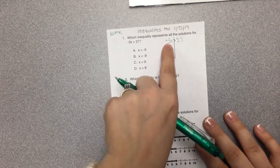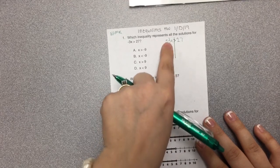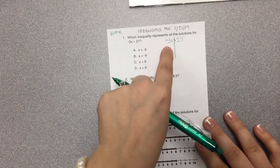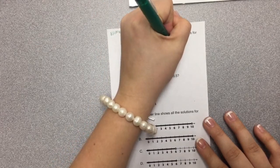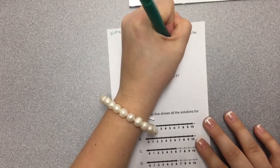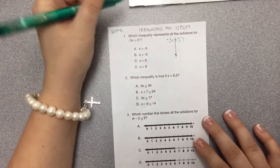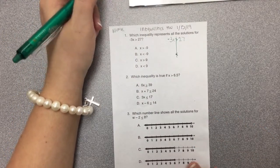My coefficient, which is the number multiplied by the variable, is negative. So I need to flip this sign. I like to do it at the beginning. You can wait if you'd like, but I do it ahead of time so I don't forget at the end.